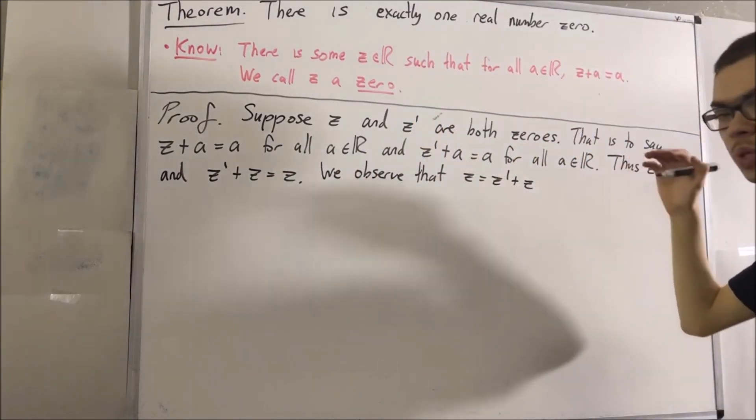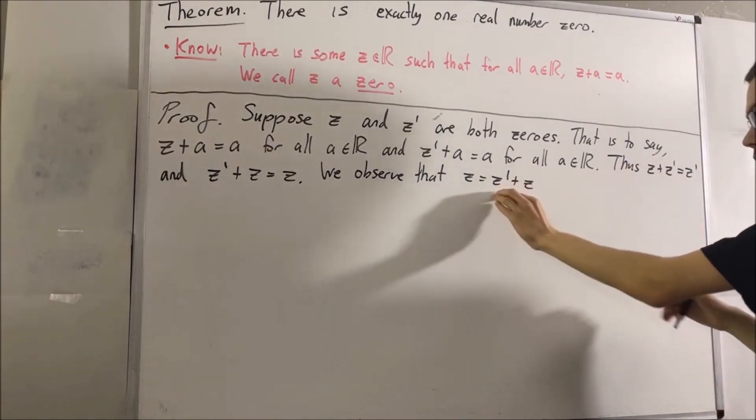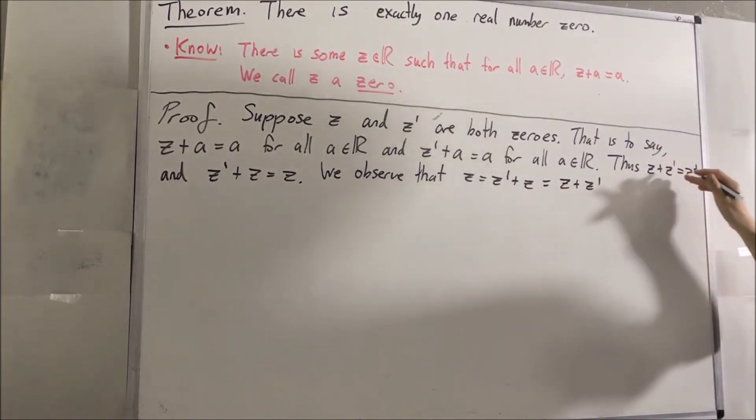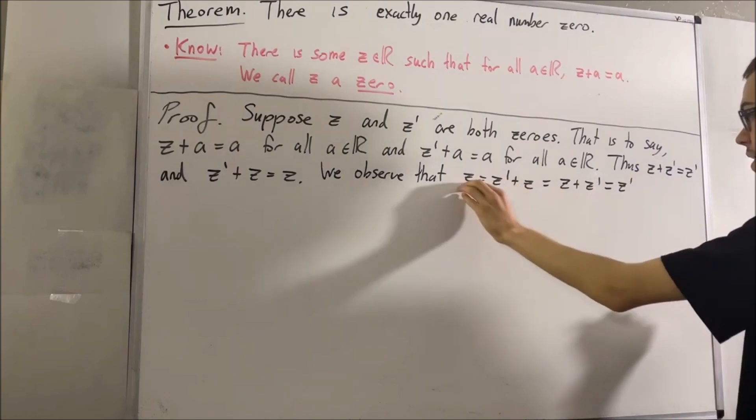But remember, from the commutative property of addition, we know that z prime plus z is equal to z plus z prime. But z plus z prime is equal to z prime. So we see from this chain of equalities that z is equal to z prime.